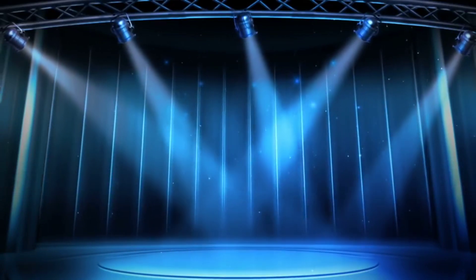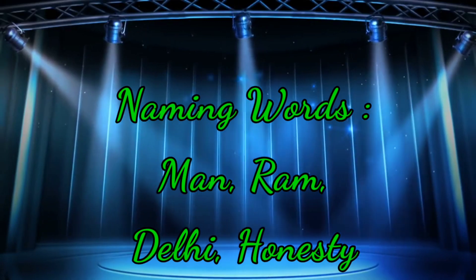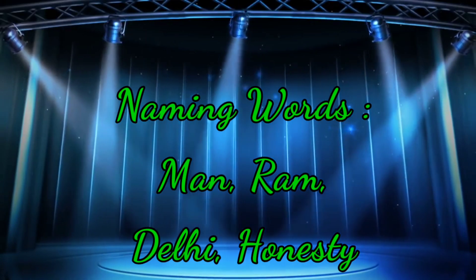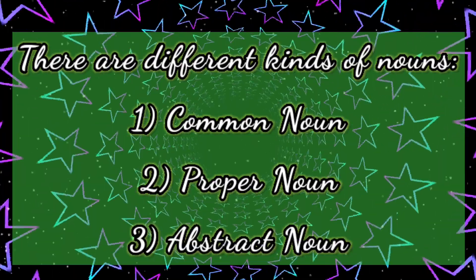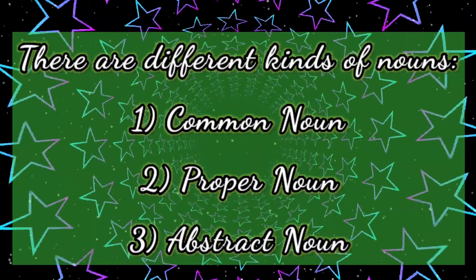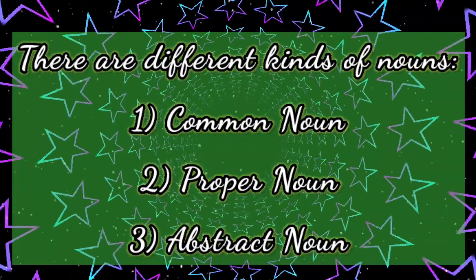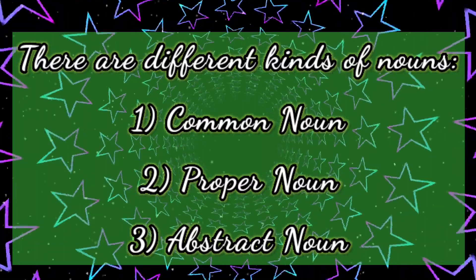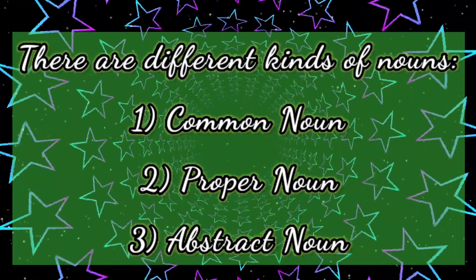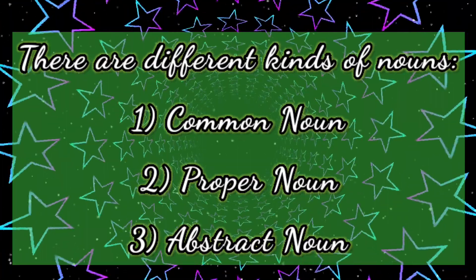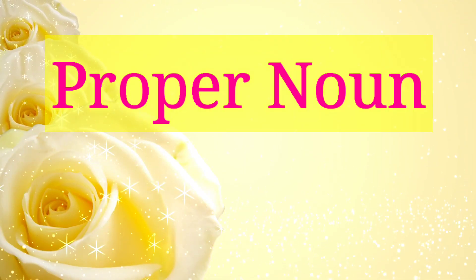Here we have few examples of nouns: Man, Ram, Delhi, Honesty. There are different kinds of nouns. In your book, there are only three kinds of nouns written: common noun, proper noun and abstract noun. Let us revise them one by one again.